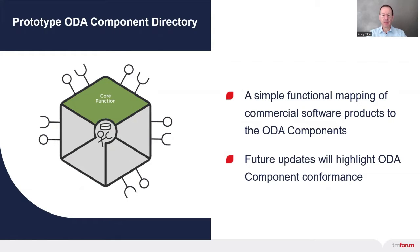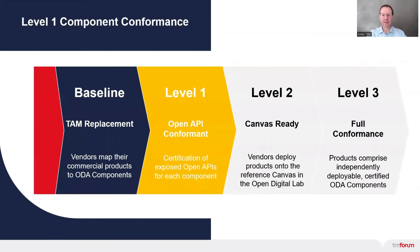However, TM Forum members are currently working to mature the component specifications and to develop test tooling and CTKs with a view to enabling full conformance certification at the component level. A first step — what we call level one conformance for a component — corresponds to certification of all the mandatory open APIs exposed by that component. The key feature of the alpha release of the ODA component directory in February 2023 will be the introduction of this level one conformance for components, making it clear which software vendors have the required open API certifications and giving them a preferential listing on the relevant component pages in the directory.